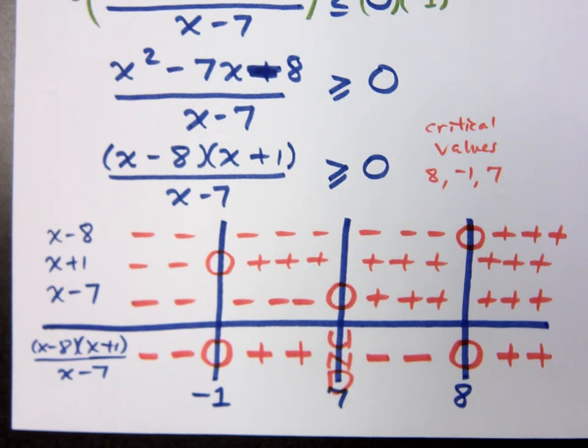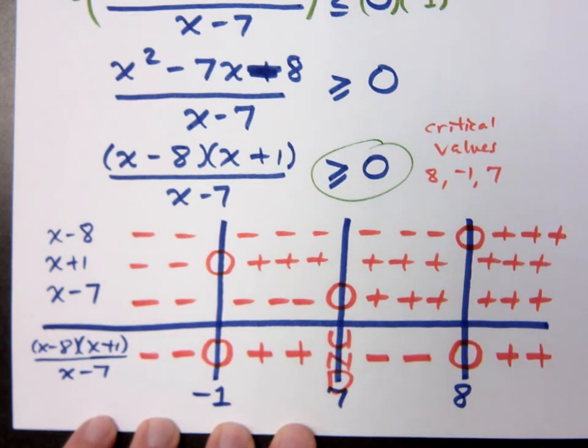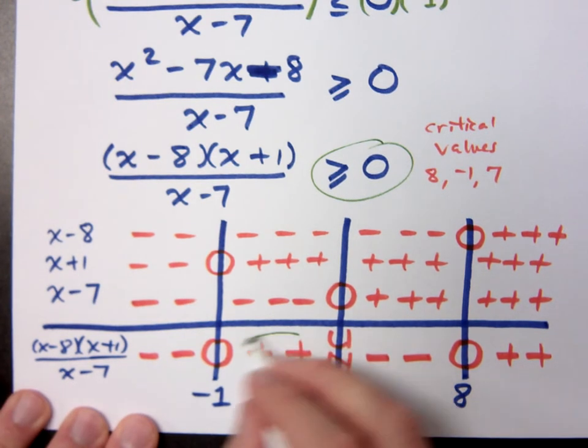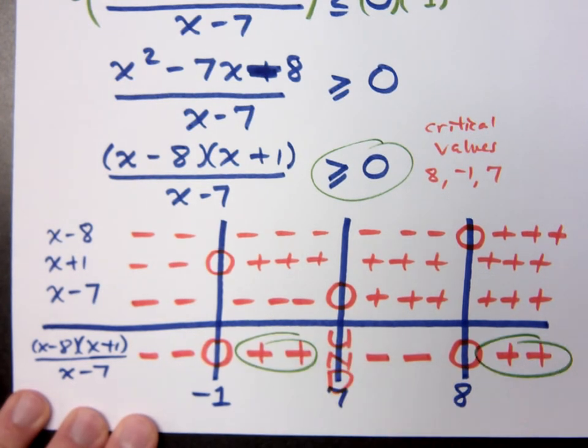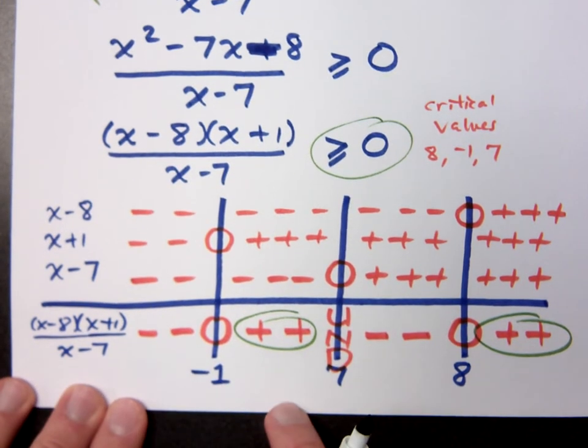Now, look at your inequality that we have here at the end. I'm looking for those pieces that are greater than or equal to 0. So, that means I'm looking for what? The positive. So, that means right here and right here. So, how do I translate this piece right here using interval notation?